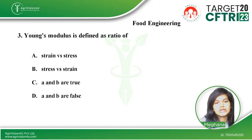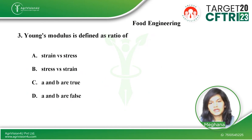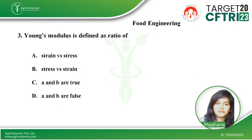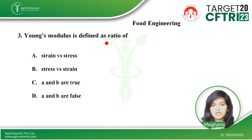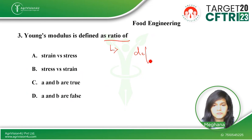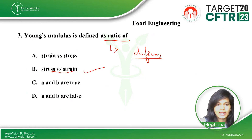The next question is: Young's modulus is defined as the ratio — this question is taken from output engineering. The first option is the ratio of strain to stress, and the second option is the ratio of stress to strain. The third option is A and B are true, and the fourth option is A and B are false. The second option — the ratio of stress to strain — is the right answer, so option B is correct.